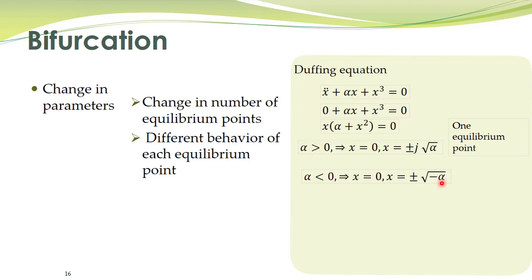This alpha is negative, and there is one more negative sign in the equation. For example, if alpha is minus 1, then minus 1 times that negative sign gives positive 1, and the square root of positive 1 is a real number — giving plus 1 and minus 1. So we have three roots to this equation. By changing a parameter of a system, the number of equilibrium points changes, and this phenomenon is called bifurcation.